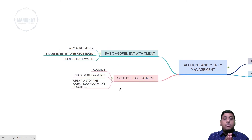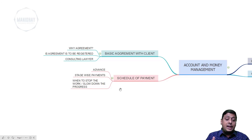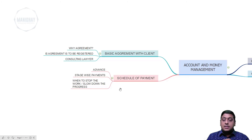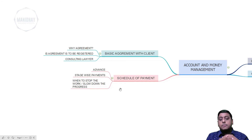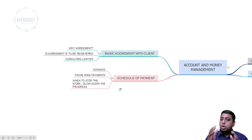Regarding schedule of payment: decide what advance you are going to take and what stage-wise payments you will collect, and when to stop or slow down work if payments are delayed. For example, if you are doing a structural design, the client pays an advance before you start. Stage by stage, as you release drawings, the corresponding payment amount is collected. This mobilization advance covers setting up your team and initiating the process.